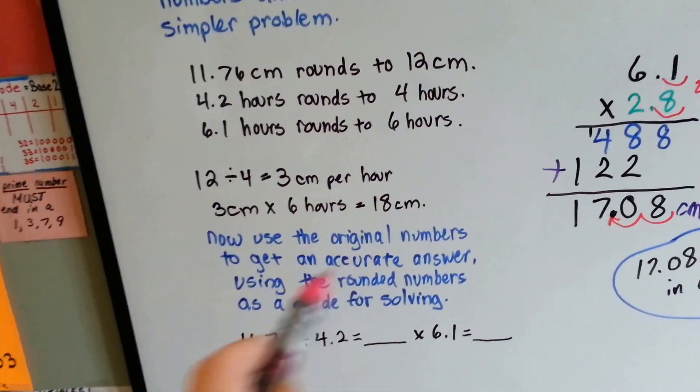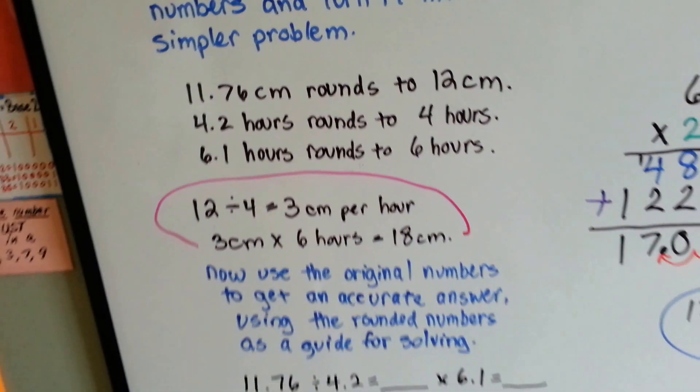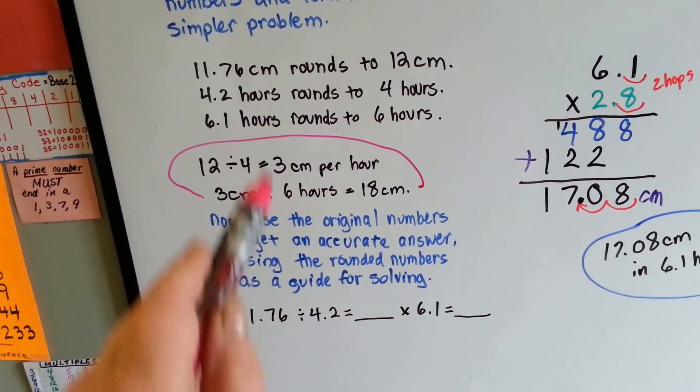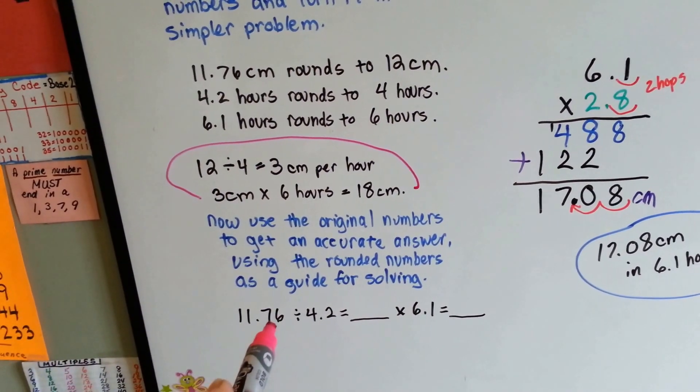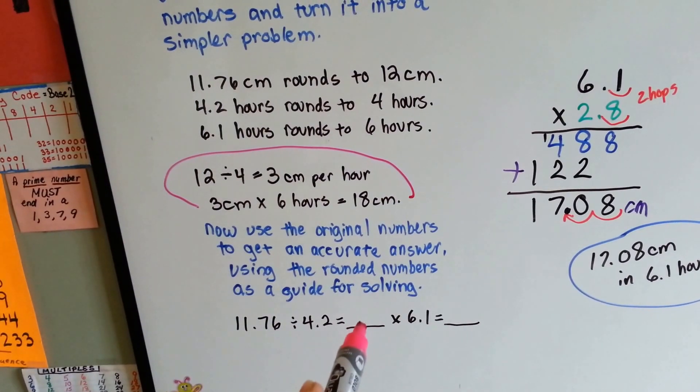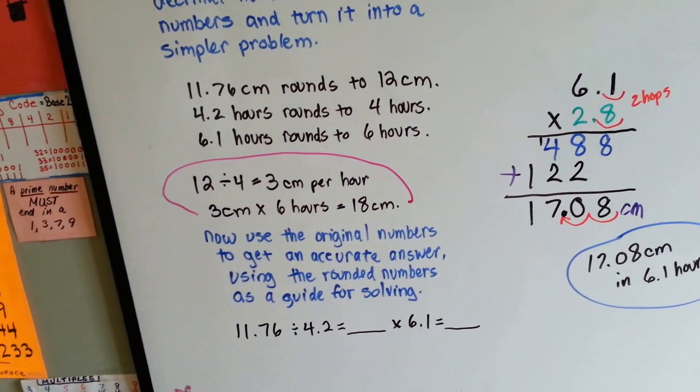Now we can use this as our guide for solving the accurate actual problem. We plug in our actual numbers into that as a guide. So, we get 11.76 divided by 4.2. That's going to tell us how much it rained per hour. We multiply it times the 6.1 hours, and we have our real answer.